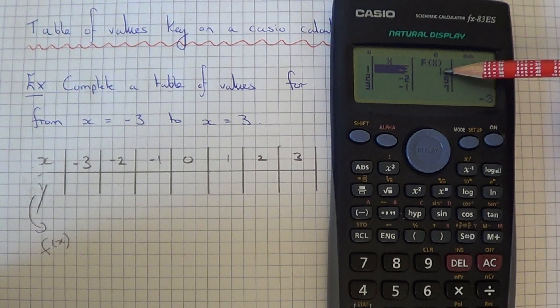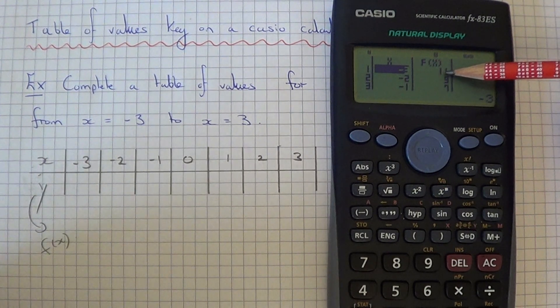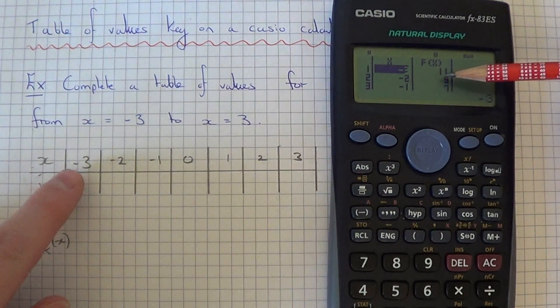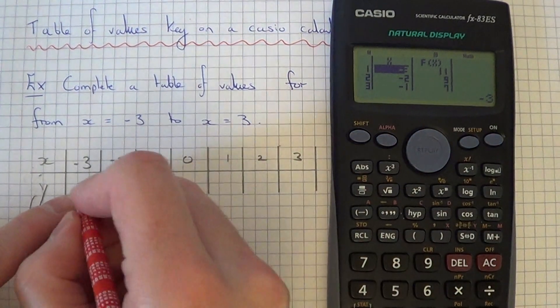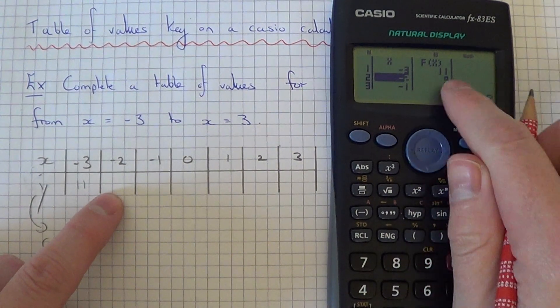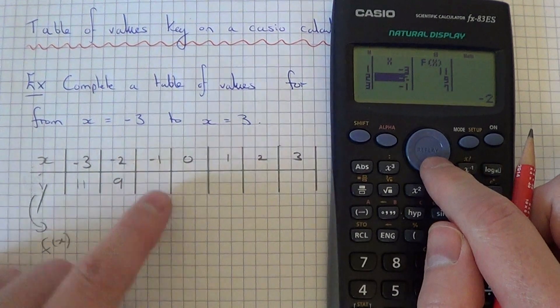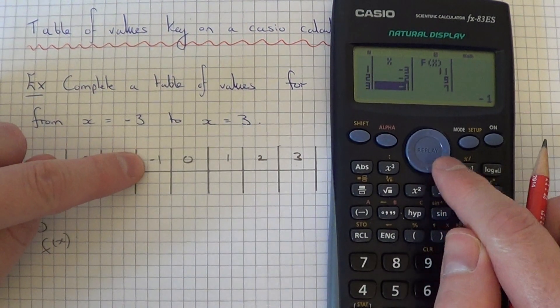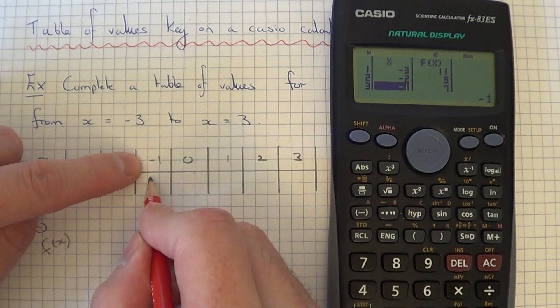You can find the y coordinates in the last column. At x equals minus 3 the y coordinate is 11. At x equals minus 2 the y coordinate is 9. At x equals minus 1 the y coordinate is 7.